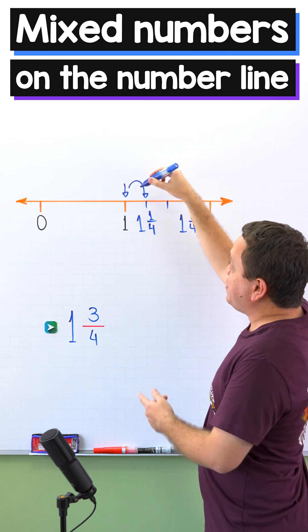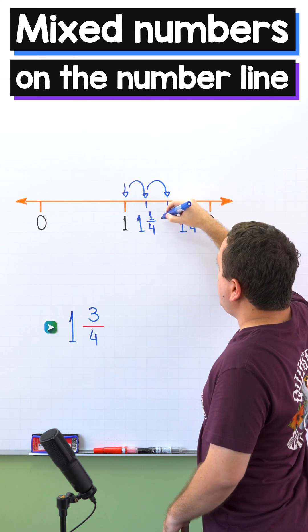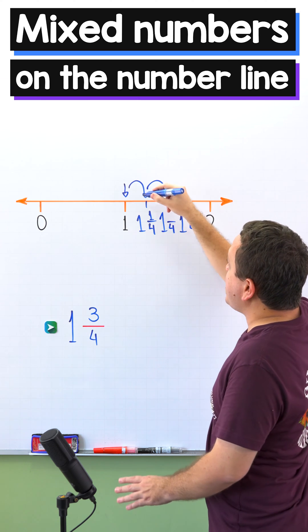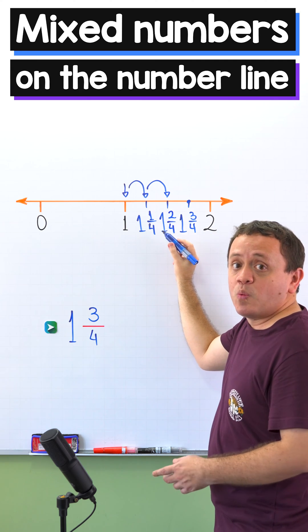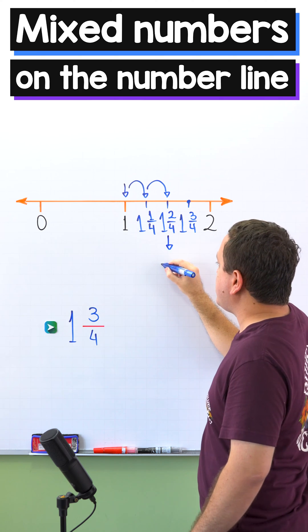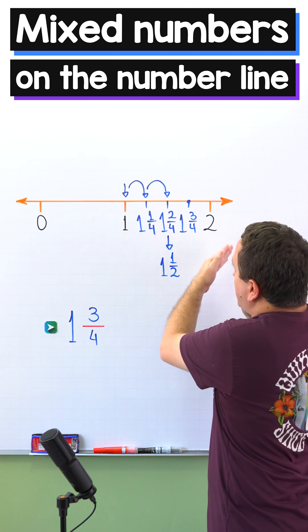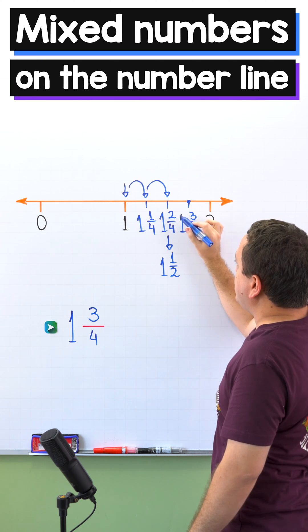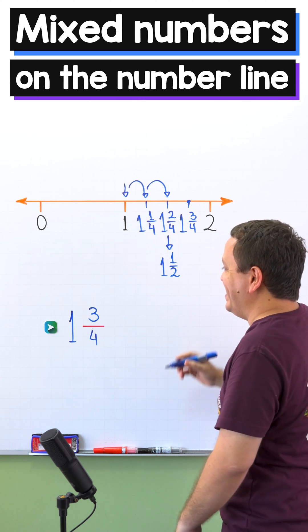Another question: what would happen if starting from one we move to the right two parts? We have started from one, we have divided this segment into four equal parts, and finally we jump to the right two parts. This is the location of the mixed number one and two-fourths. If you know how to simplify fractions, you can rewrite this mixed number as one and one-half. So the numbers we have are: one, then one and one-fourth, then one and two-fourths (or one and one-half), then one and three-fourths, and finally two.